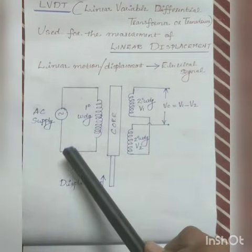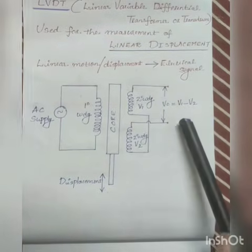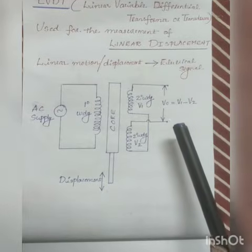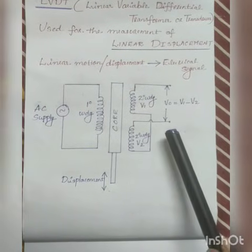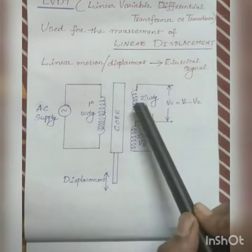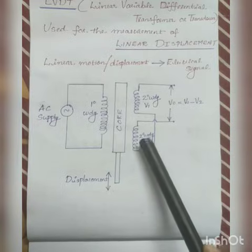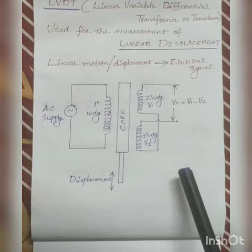Input supply is connected across primary winding and output voltage is measured at secondary windings. Few conditions that are to be satisfied for the secondary winding. First condition: secondary winding 1 and secondary winding 2 must be connected in series.